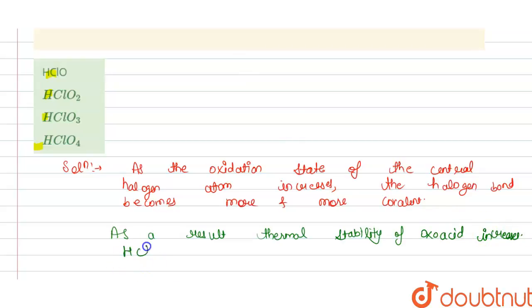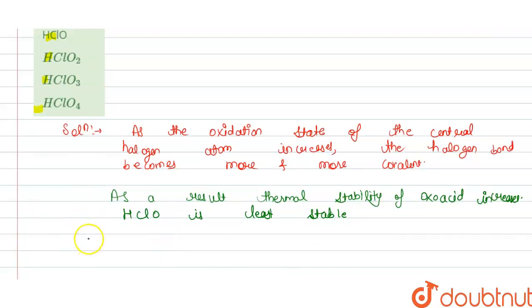So we have the HClO is least stable to the heat, whereas HClO4 is more stable or we can say that most stable out of these, most stable to heat.